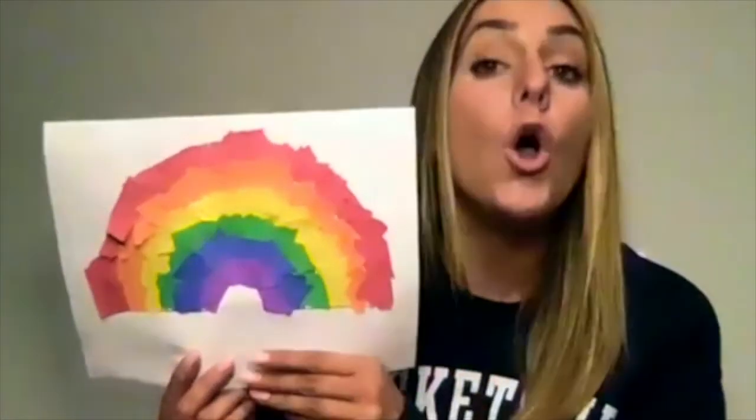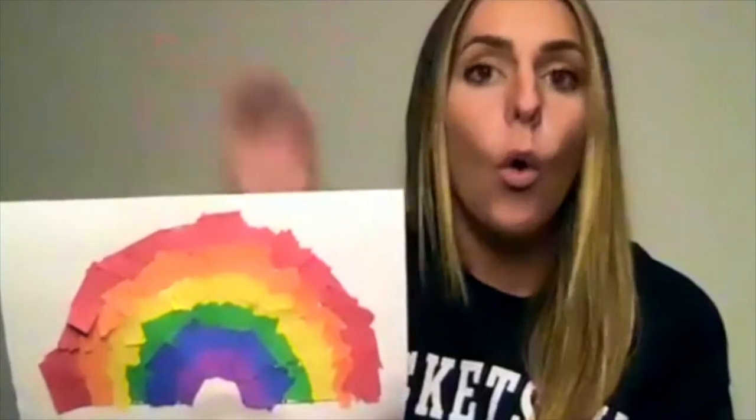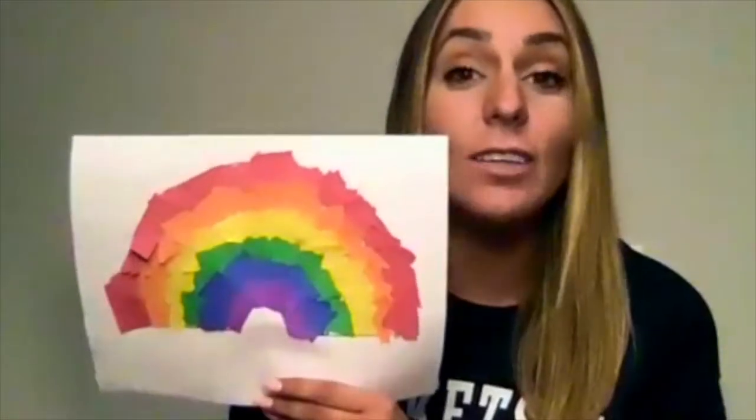Today, we're going to be making rip-and-stick rainbows. It's springtime outside, which means there's lots of rain. Lots of rain means the flowers are growing, but it also means we're going to see a lot of rainbows. Rainbows happen when the sunshine reflects or bounces off the rain or water in the air, and it makes these colors appear.